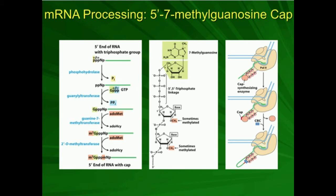Now we have an enzyme called guanyletransferase. Guanyletransferase is going to transfer a guanosine monophosphate onto the second of those two phosphates. Now what we have is a guanosine — because it's on the ribose — then three phosphates and then the nucleotide NP. Now we need to get a methyl group on the seven position of the guanine base. That's catalyzed by guanine-7-methyltransferase, which uses S-adenosylmethionine (AdoMet) as the methyl group donor.